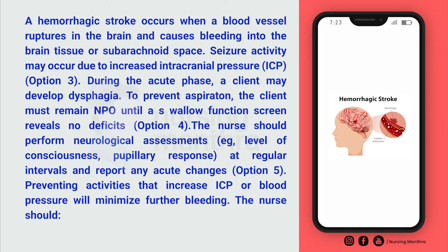A hemorrhagic stroke occurs when a blood vessel ruptures in the brain and causes bleeding into the brain tissue or subarachnoid space. Seizure activity may occur due to increased ICP — intracranial pressure.